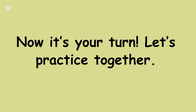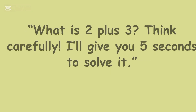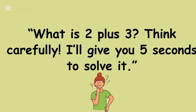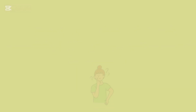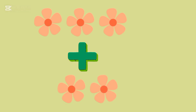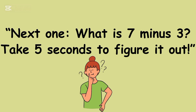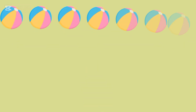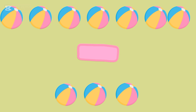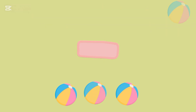Now it's your turn. Let's practice together. What is two plus three? Think carefully — I will give you five seconds to solve it. Yes, you are right! Three plus two flowers equals five. Next one. What is seven minus three? Take five seconds to figure it out. Yes, you are right! Seven minus three balls equals four.